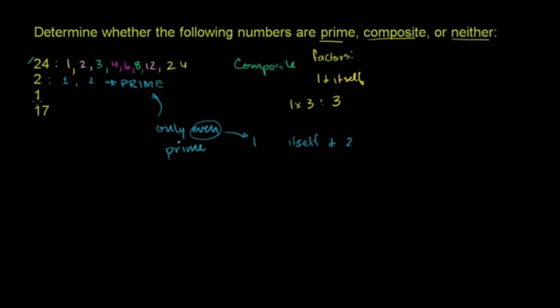Now here's an interesting case: 1. 1 is only divisible by 1. So it is not prime, technically, because it only has 1 as a factor.